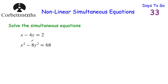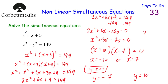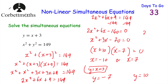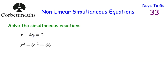Let's look at our next question: solve the simultaneous equations x minus 4y equals 2, and x squared minus 8y squared equals 68. This one's a little different — you don't have x equals or y equals directly. What you do is make x or y the subject of the top equation, and then substitute into the bottom one.